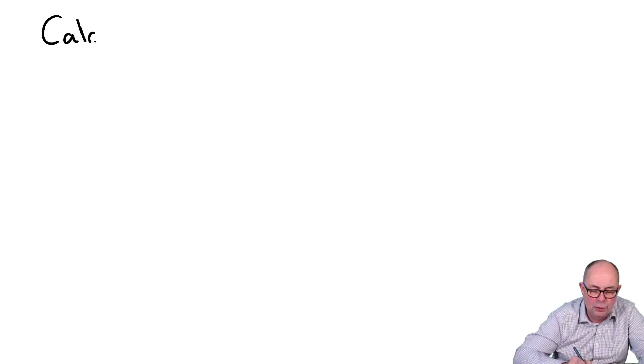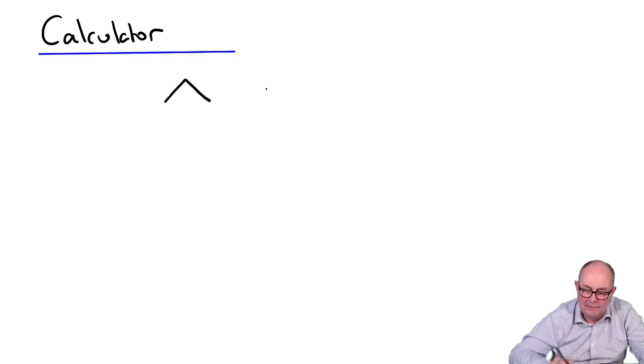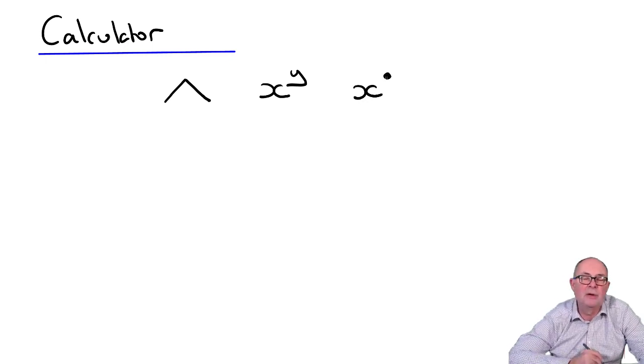So, make sure you know where your discounting button is. Your discounting button will look like that, a little hat, or an X to the power of Y key, or an X Y spot key. It's probably one of those anyway.